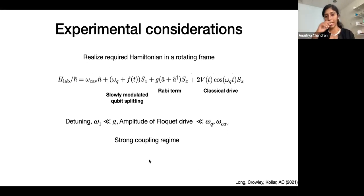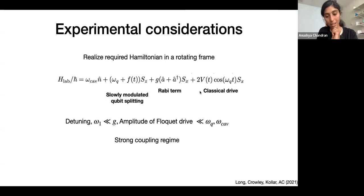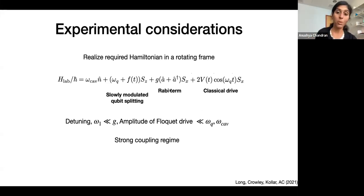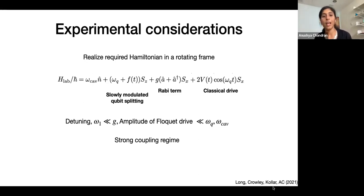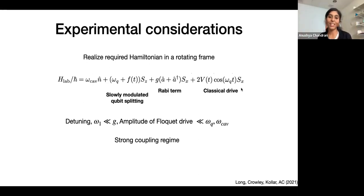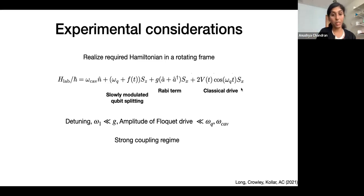We have a lab Hamiltonian that looks a little bit different — it has a cavity energy, a slowly modulated qubit splitting, a cavity-qubit coupling, and a classical drive. In the standard hierarchy of scales available in cavity QED or circuit QED, where the cavity-qubit interactions are not the largest scale, if you go to the rotating frame, you realize exactly the Hamiltonian we're after with the correct hierarchy of scales. With the ingredients of slow modulation of the qubit splitting and an external slow drive, this effect is eminently accessible in today's circuit QED and cavity QED devices. Indeed, Alicia Kollar's lab at Maryland has built a device realizing this Hamiltonian and is in the process of characterizing it.